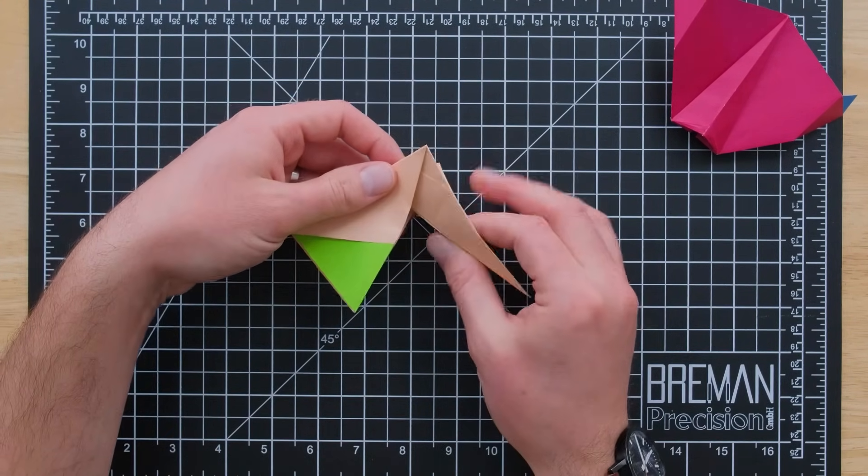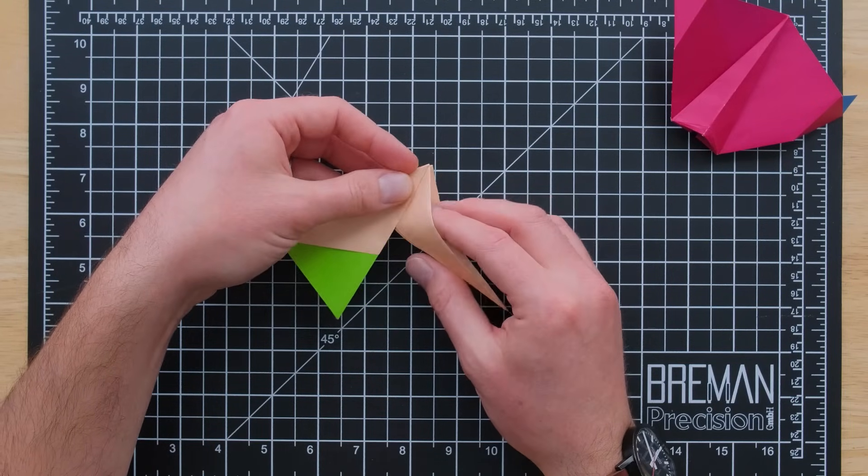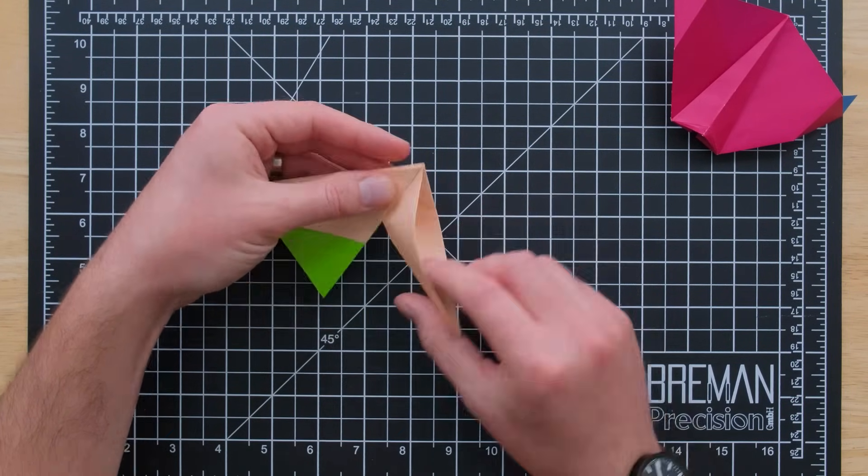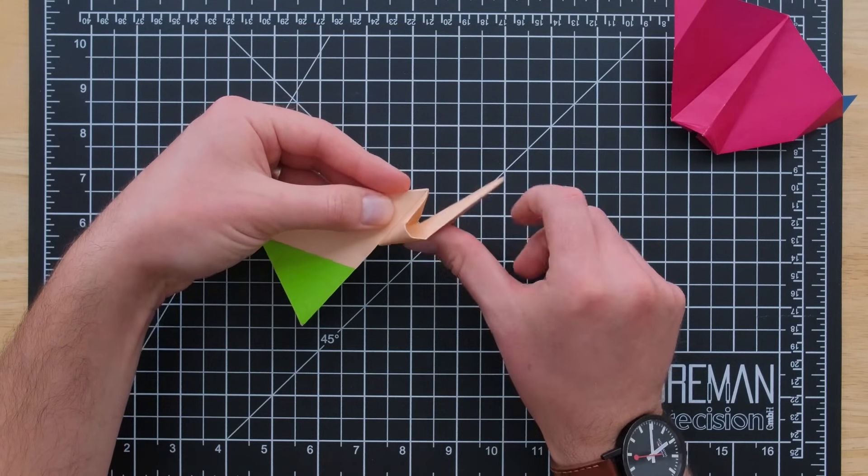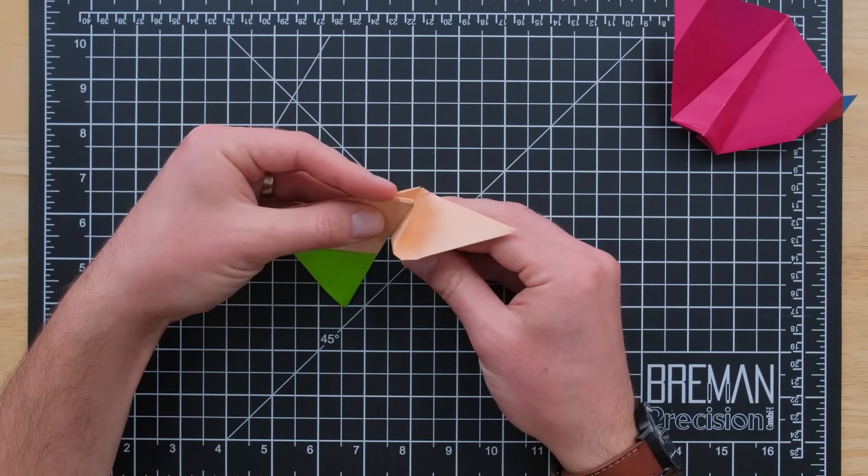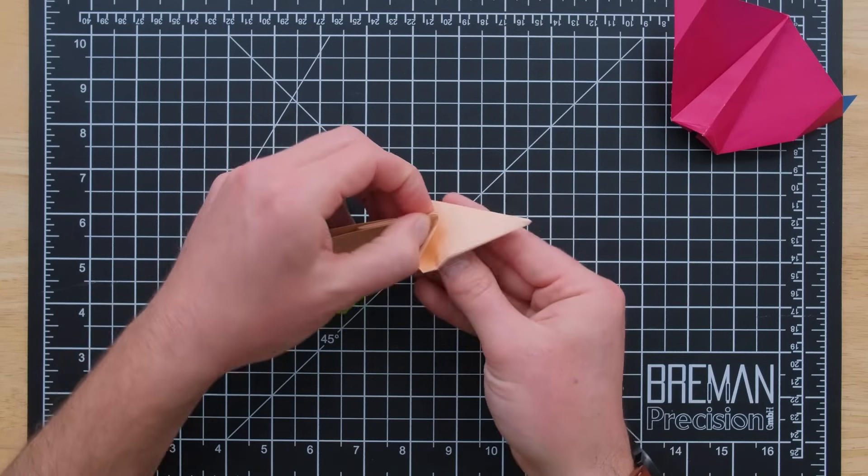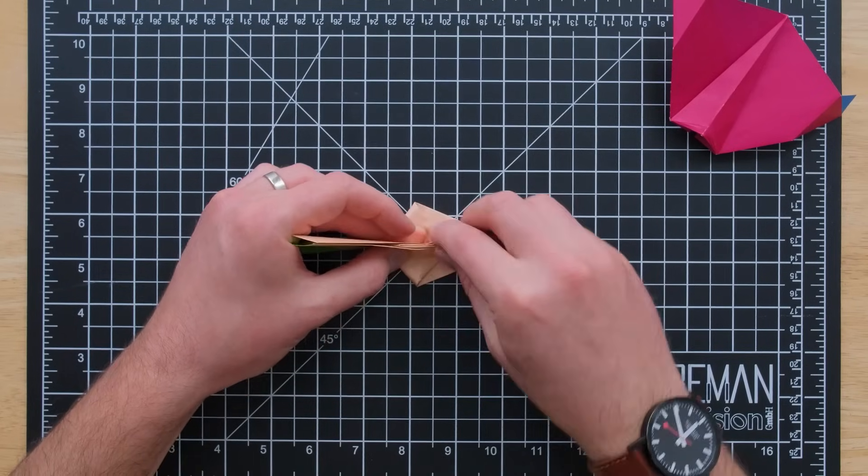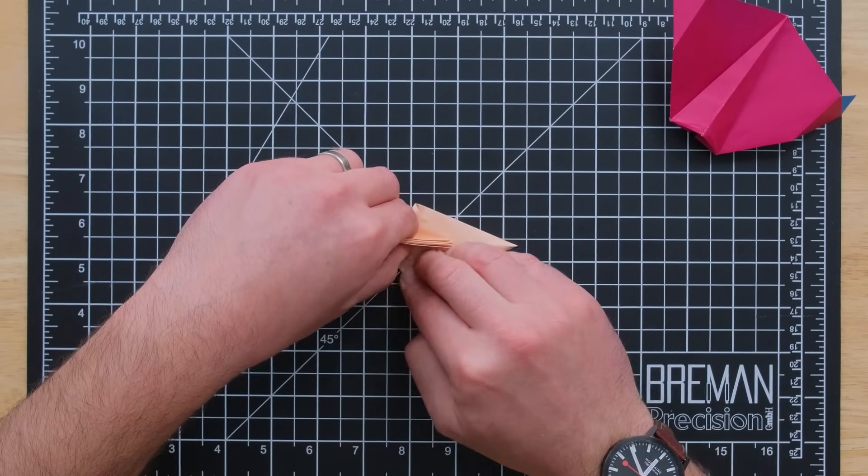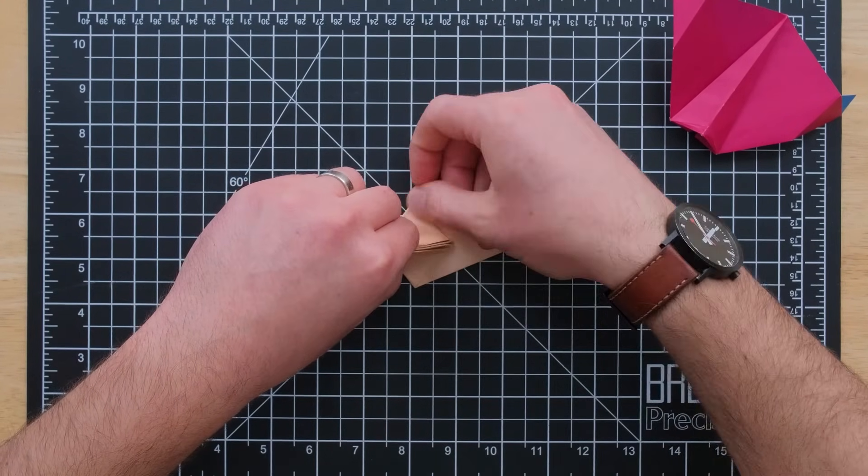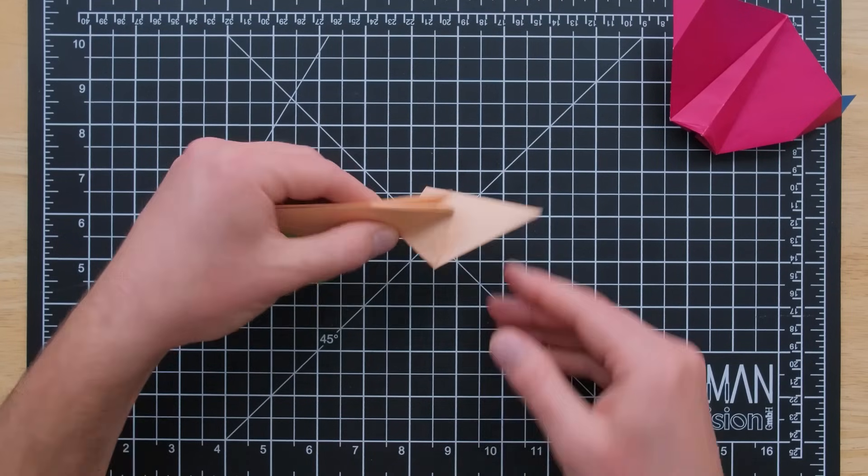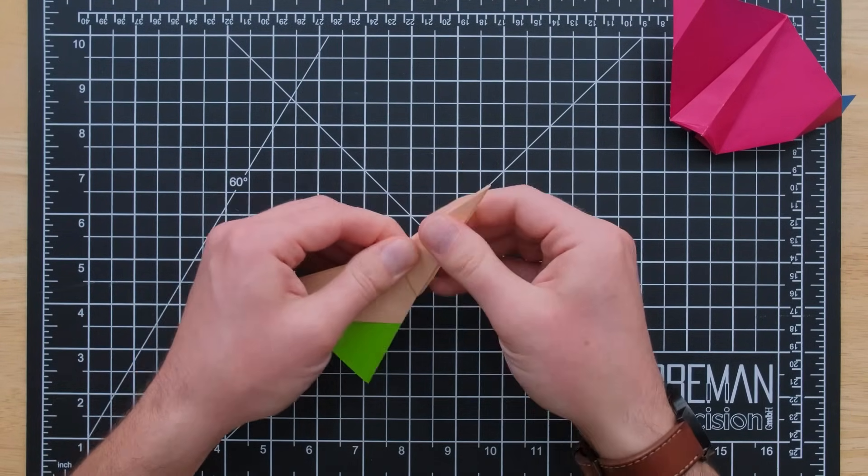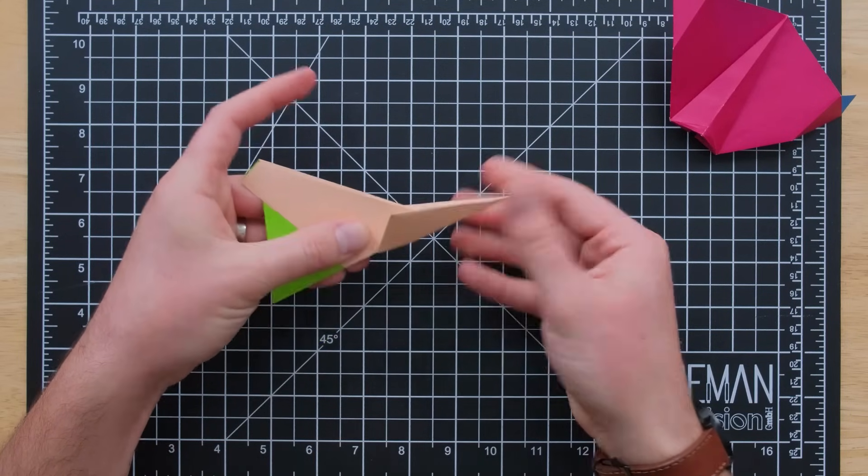Now we have a big triangle of paper here. We're going to squash fold that again up against the body. So we're going to open up the front of it and just push it in like so until it falls right along the center line of the plane. We're actually going to make a little bit of a diamond shape here. And then I just like to crease it up along the nose just to make sure everything falls into place. Perfect.